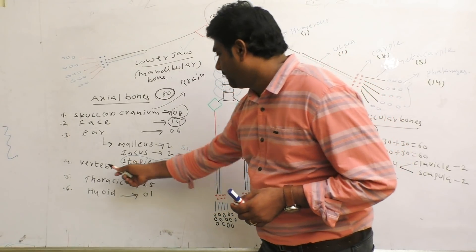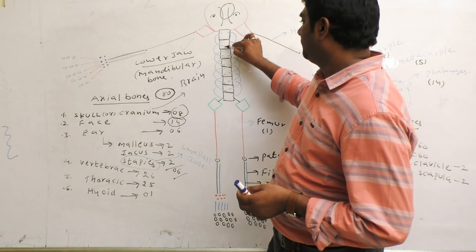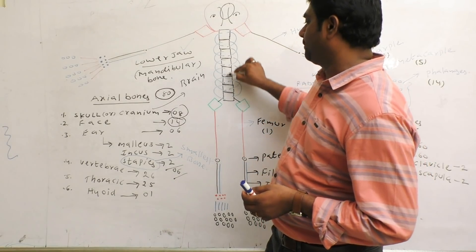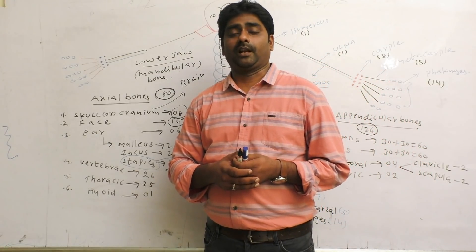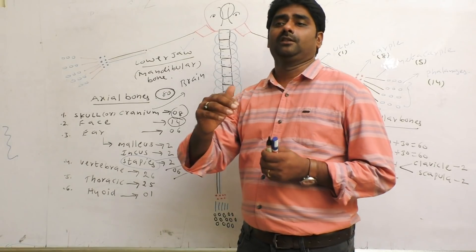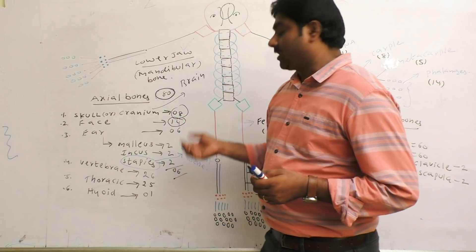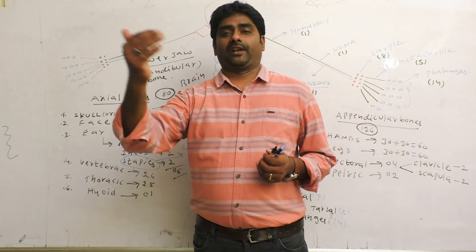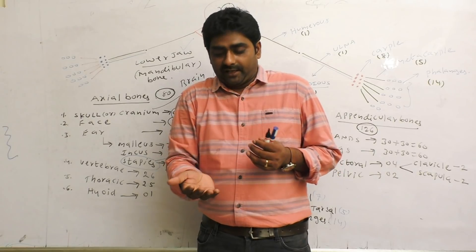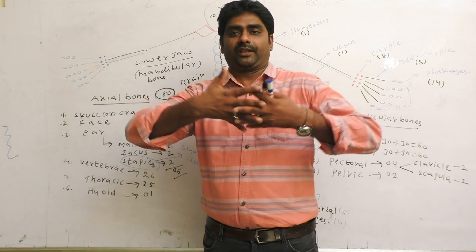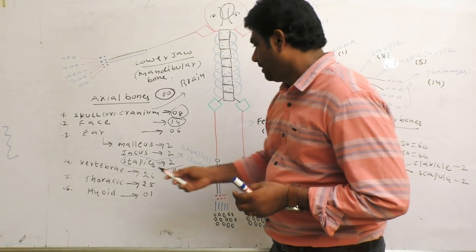Vertebrae — these are the spine bones, total 26 in adults. In children, there are 33 vertebrae. In children overall, there are 270 to 300 bones. While age increases, many bones fuse together, so an adult has 206 bones.